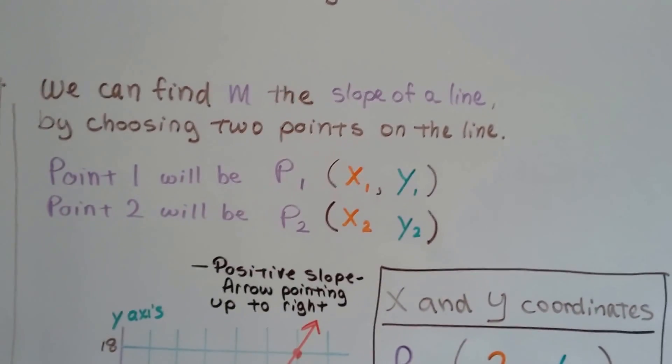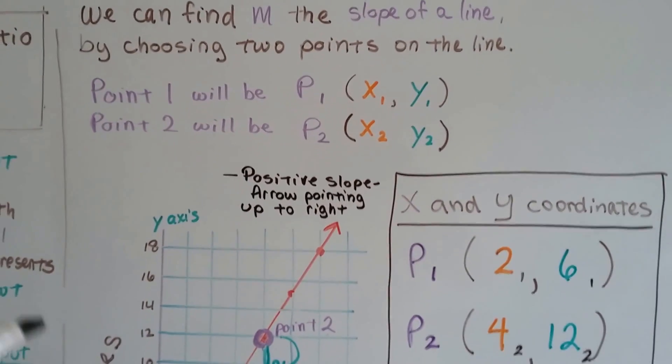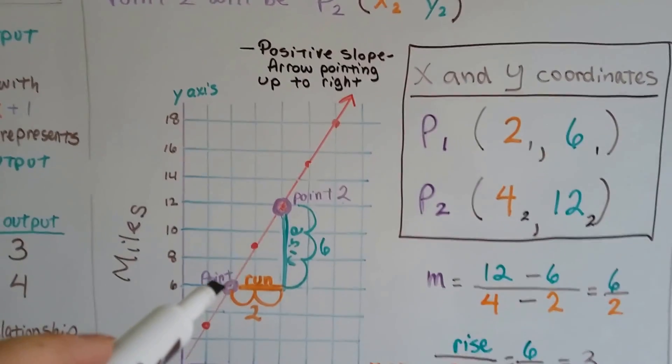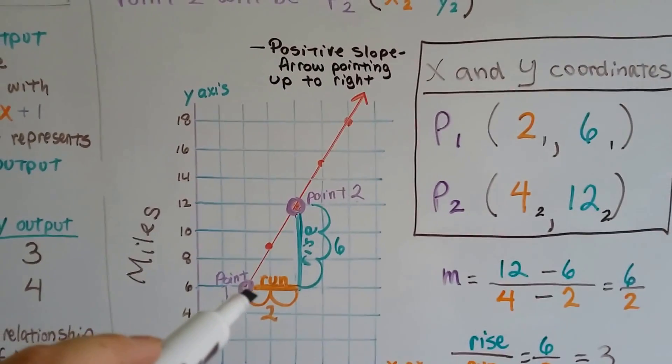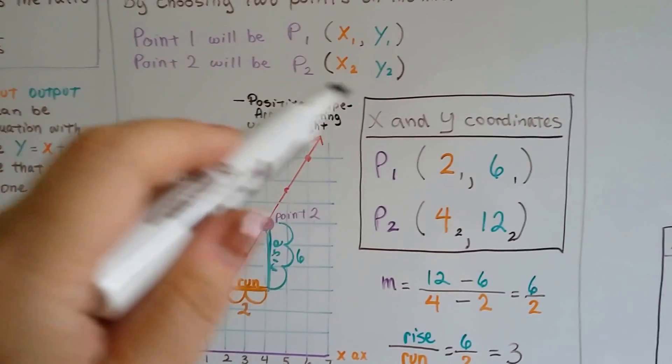We can find m, the slope of a line, by choosing two points on the line. Point 1 will be p1 and point 2 will be p2. So here's point 1 right here. We need to find the x and y coordinates for each point.